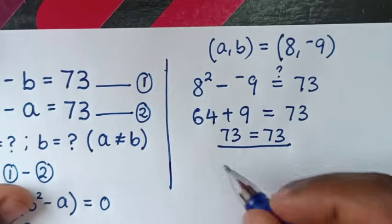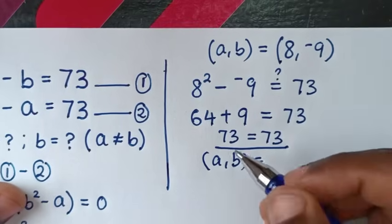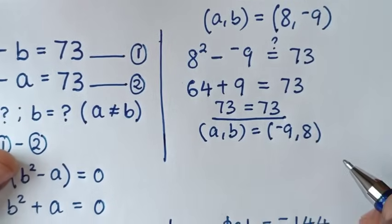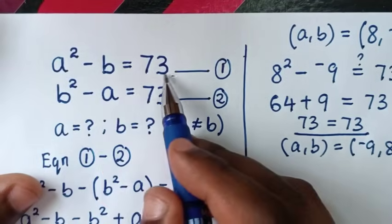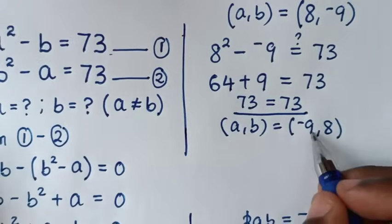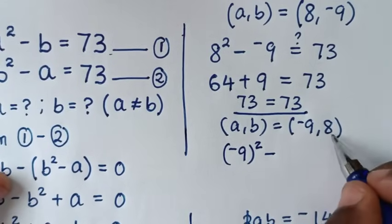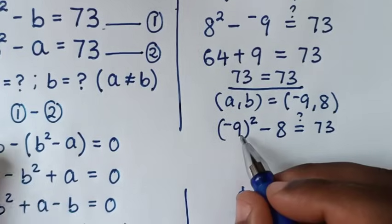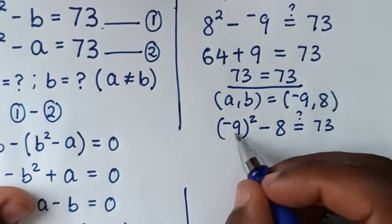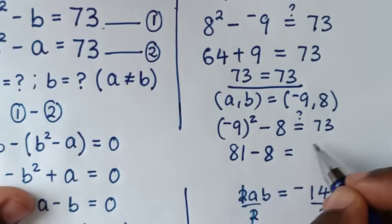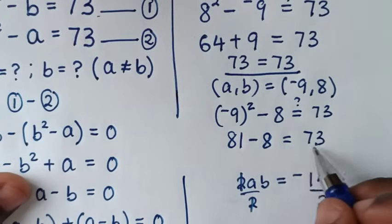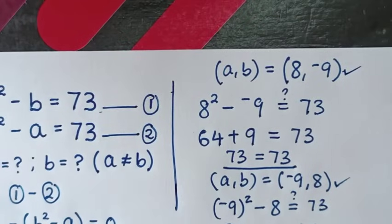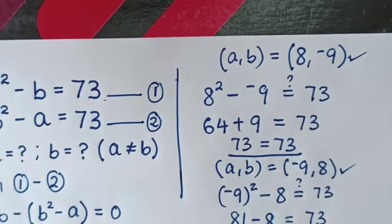From the second solution, a comma b equals negative 9 comma 8. Using the first equation: a squared minus b equals 73. So negative 9 squared minus 8 equals 81 minus 8, which equals 73. This is also true, so the second solution is also correct. We have two solutions: a comma b equals 8 comma negative 9, and a comma b equals negative 9 comma 8. Thank you for watching.